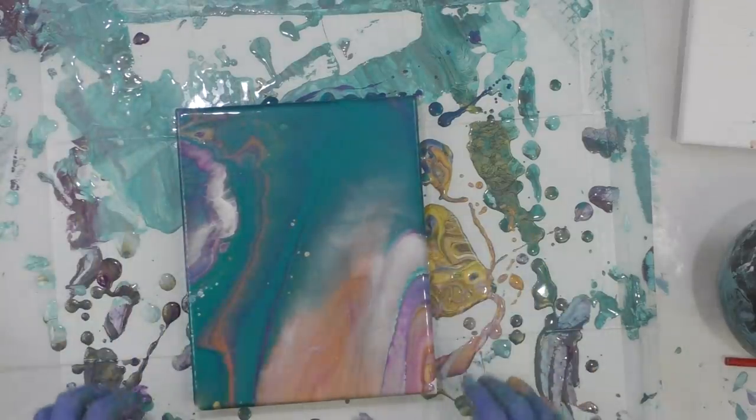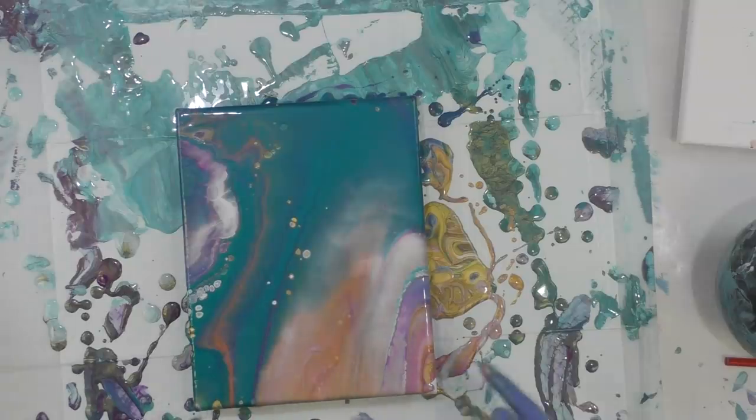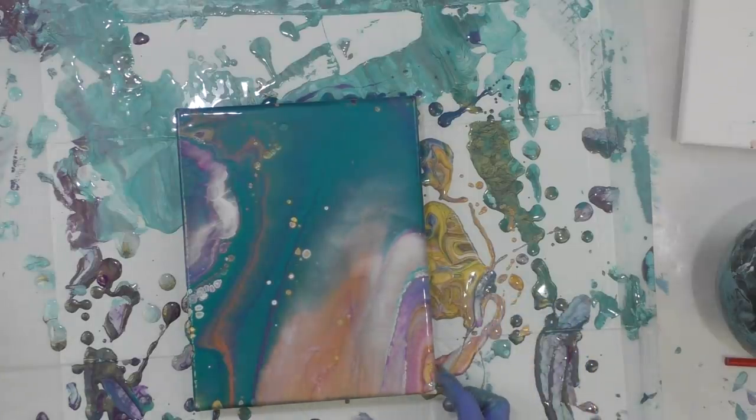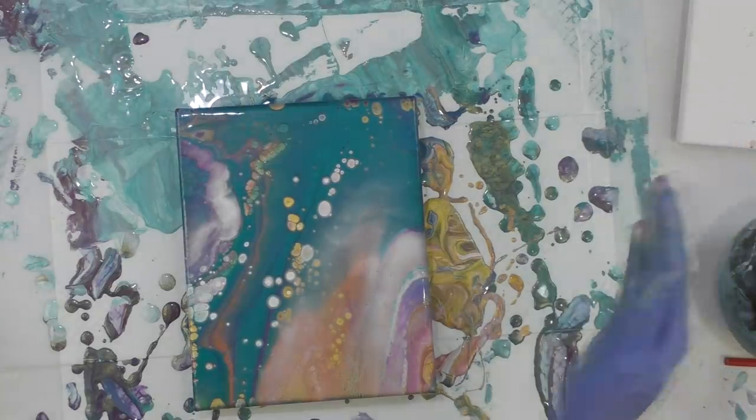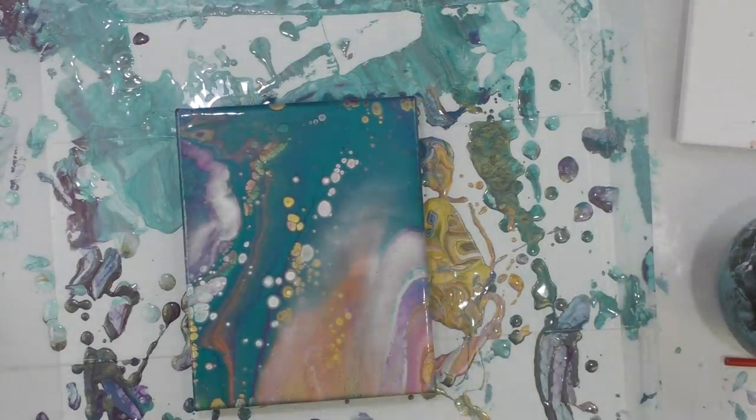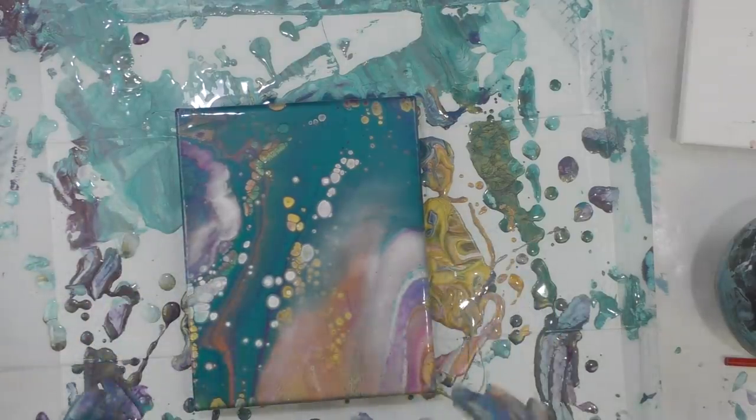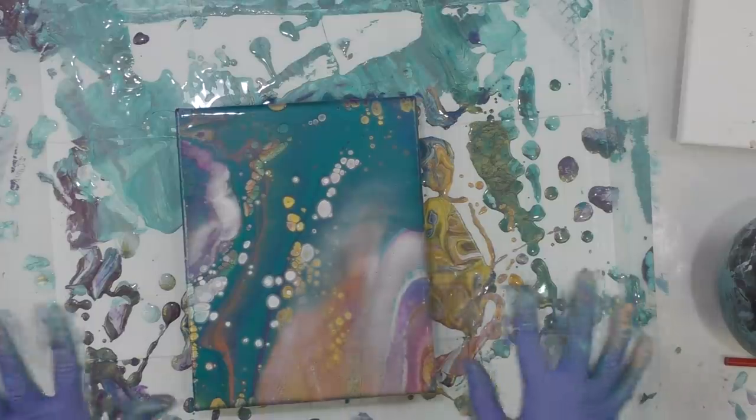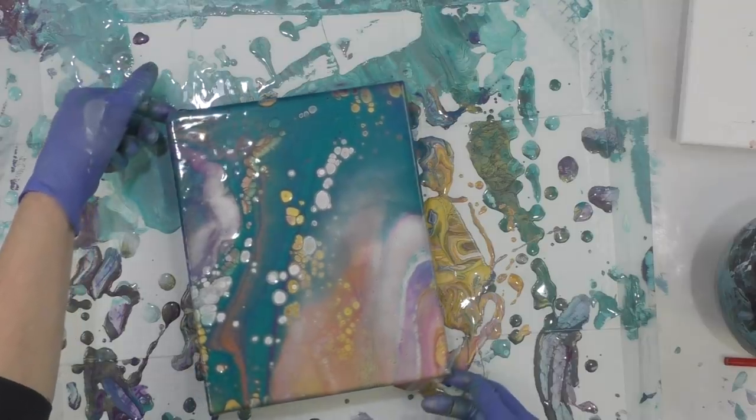So it blended very kind of ethereally, almost like a cosmic thing. But you can see little cells starting to pop through. So I was going to take my other canvas and press it down, but I don't think I am because I like this too much. What's going on with the cells popping through, I'm just going to let it do its magic and let it work itself out over time.